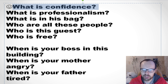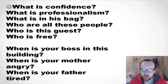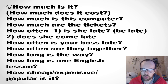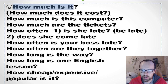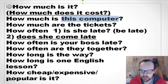More examples: 'What is confidence?' 'What is professionalism?' 'What's in his bag?' You can ask 'what is', but normally in spoken English we say 'what's'. 'Who are all these people?' 'Who is this guest?' 'Who is free?' 'When is your boss in this building?' 'When is your mother angry?' 'How much is it?' — you can ask how much is it. 'How much is this computer?' 'How much are the tickets?' — this computer means 'it' so you need 'is'; the tickets means 'they' so you need 'are'.